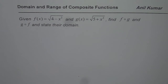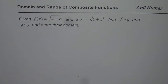I'm Anil Kumar sharing with you an excellent test problem on domain and range of composite functions. Given f(x) equals square root of (4 minus x squared) and g(x) equals square root of (5 plus x squared), find f of g and g of f and state their domains.